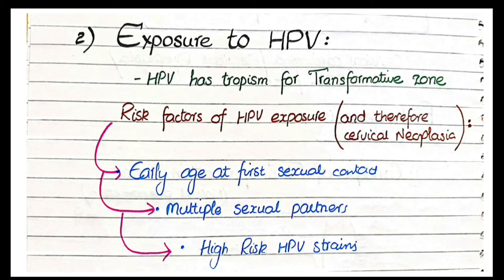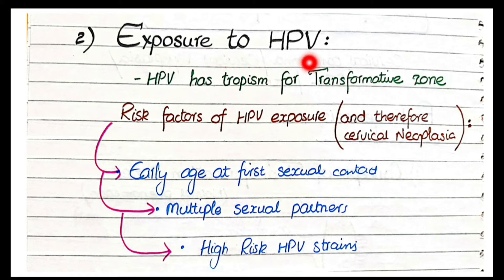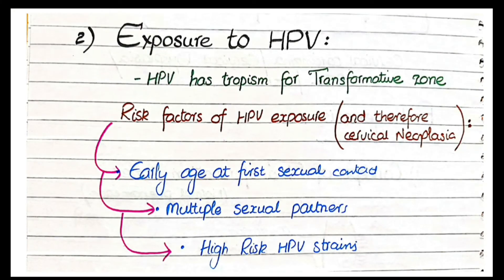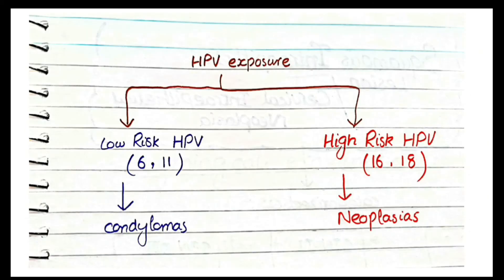The first important step in the development of cervical neoplasia or cervical dysplasia is exposure to human papillomavirus (HPV). The transformation zone concept is important because HPV has tropism for the transformation zone — it preferentially infects this area. The risk factors for HPV exposure include early age at first sexual intercourse, multiple sexual partners, and infection with high-risk HPV strains.